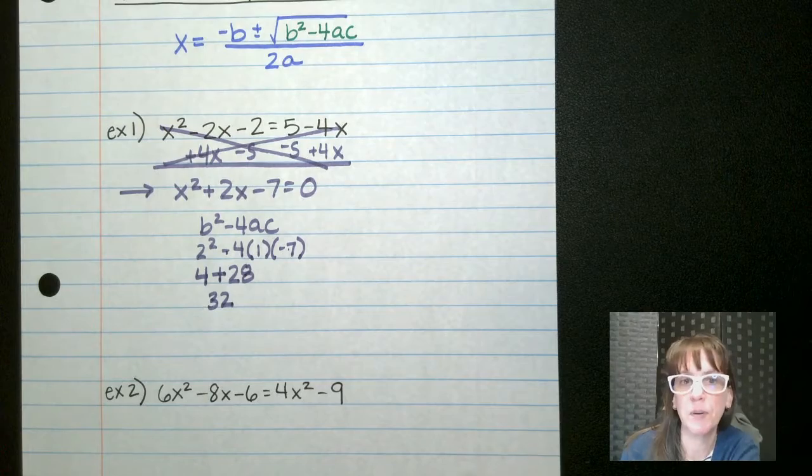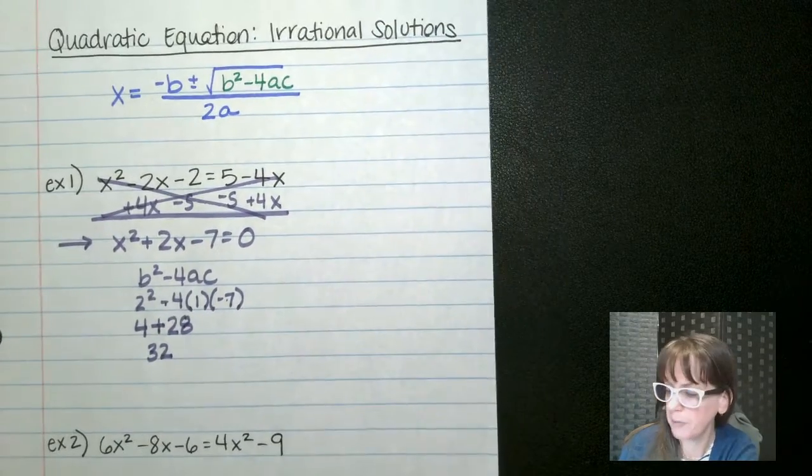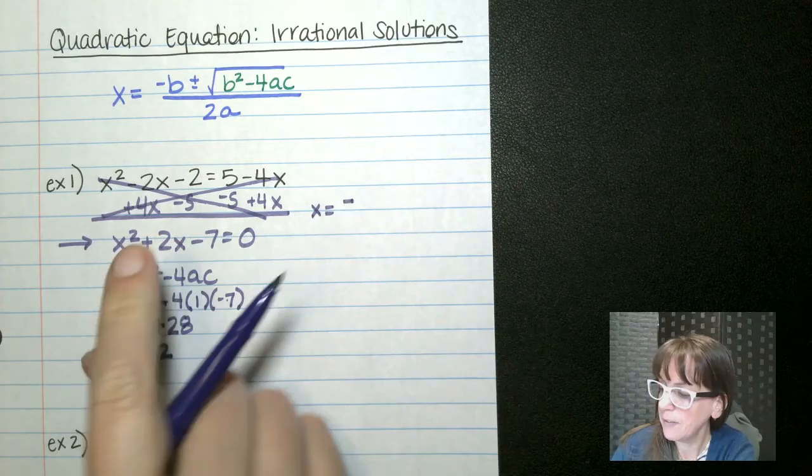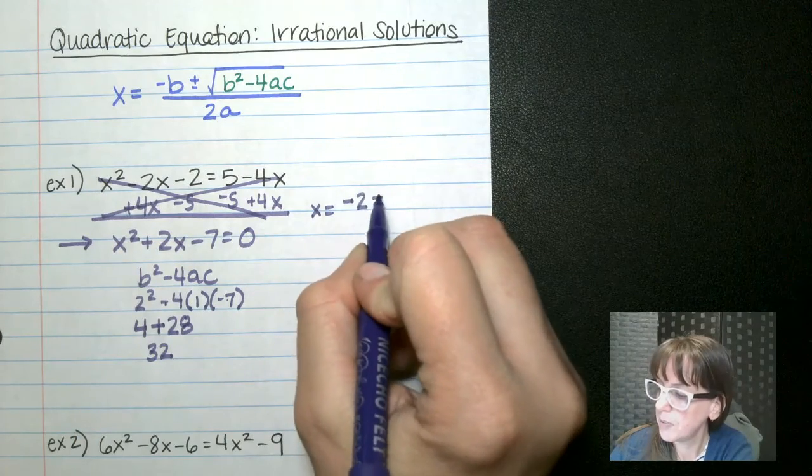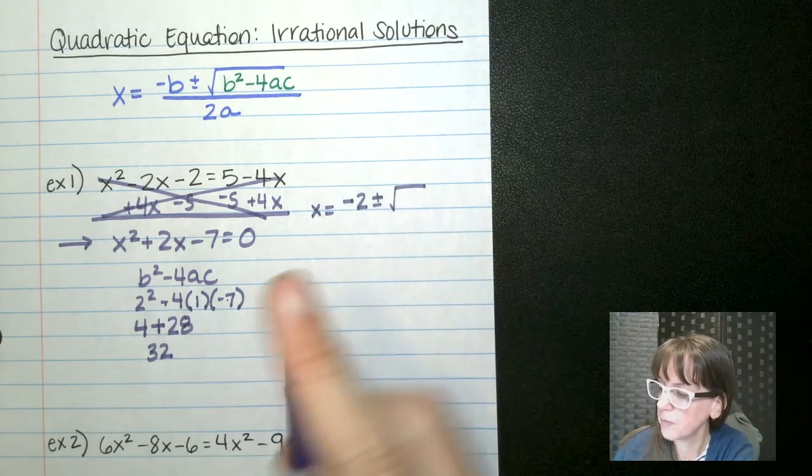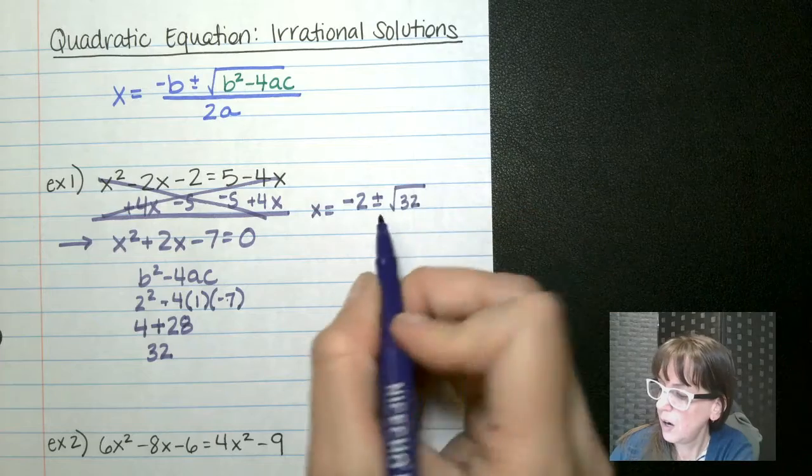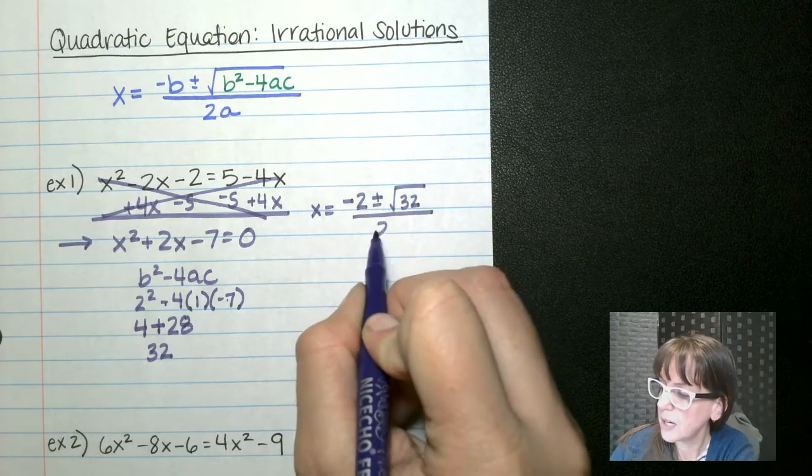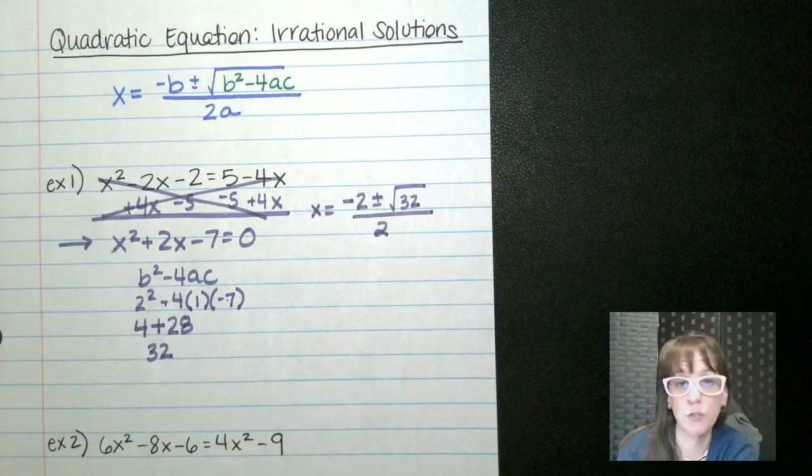All right, now that we have our discriminant, we are ready to use our quadratic formula. x equals negative b, which is 2, plus minus the square root of our discriminant, which is 32, all divided by 2 times a, which is 1, so just 2 times 1.